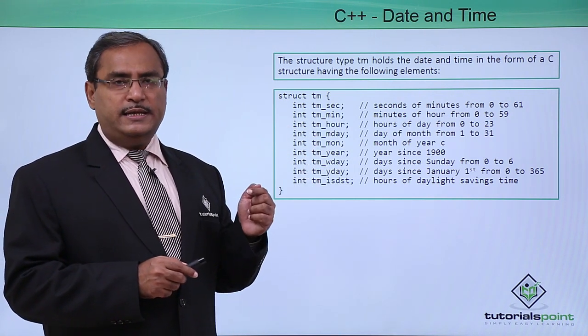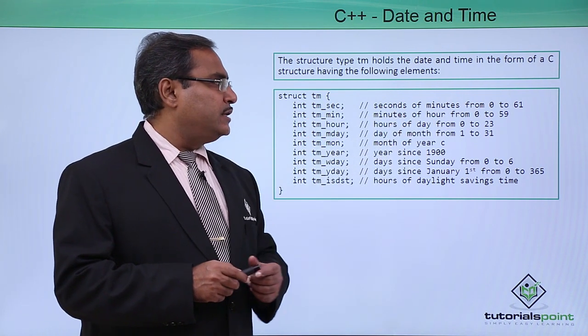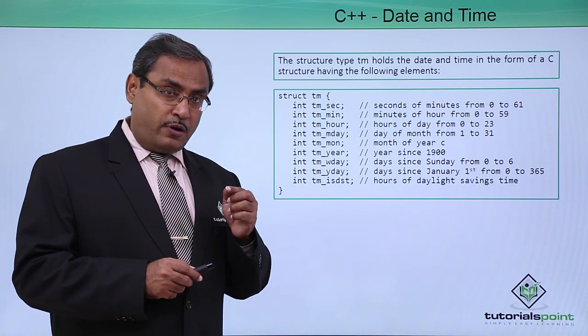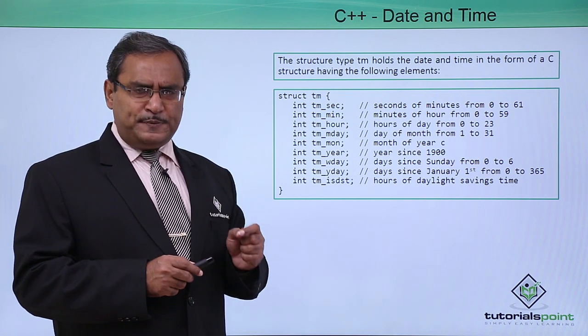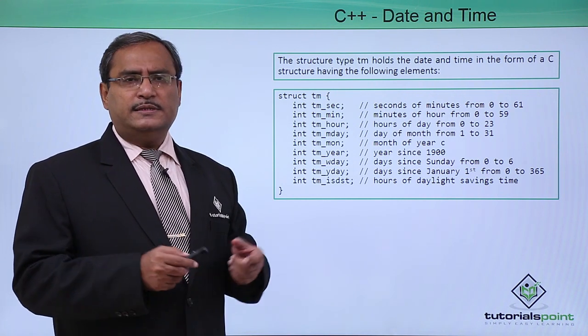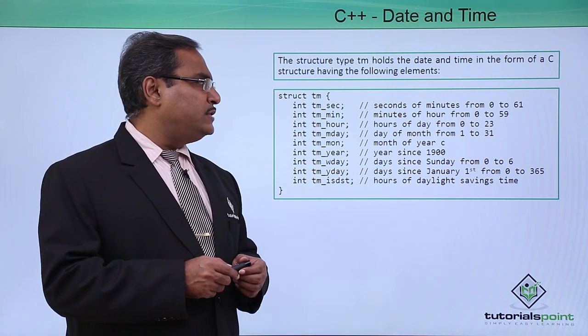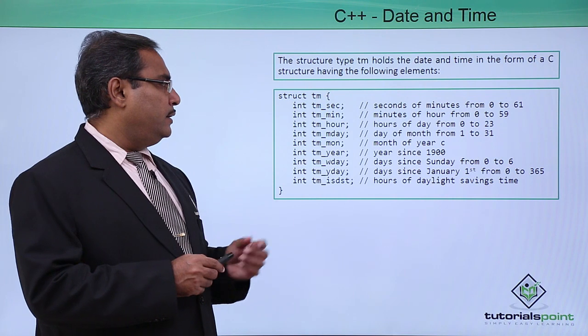The first one is tm_sec, seconds of minutes from 0 to 61. It is not 0 to 59, it is from 0 to 61 because sometimes we require some leap seconds in some systems. int tm_min, minutes of hour from 0 to 59, it is quite logical. int tm_hour, hours of the day from 0 to 23.